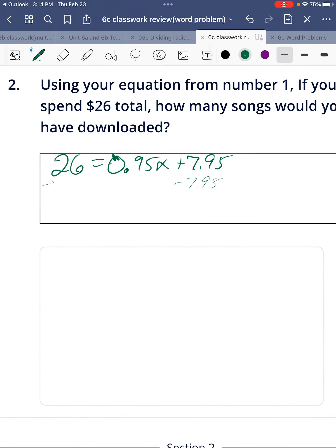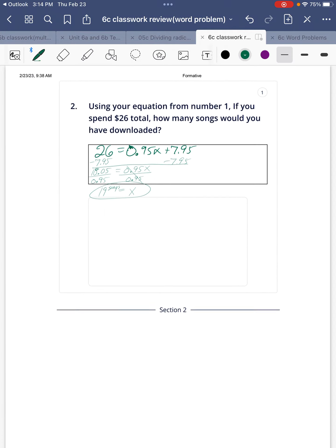Solve this equation. Minus $7.95, minus $7.95. And that comes out to 18.05. Divide by 95. You'll get x equals, and that will come out to 19 songs that we can download for $26.